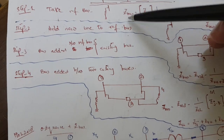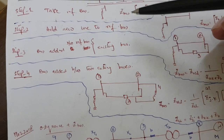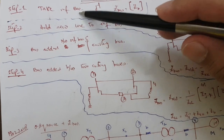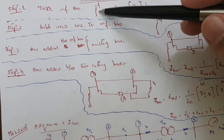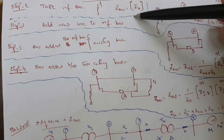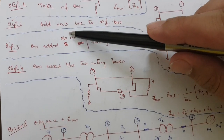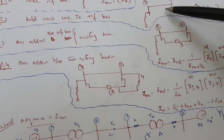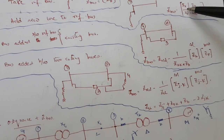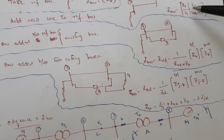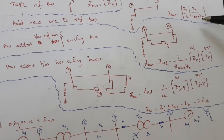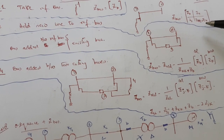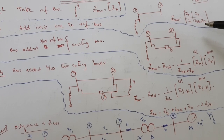It is important to know the universal steps for the Z-bus. Step number one: take the reference bus first. Step number two: add a new line to the reference bus, and the formula for this is Z-bus new equals Z-kk plus Z-b.